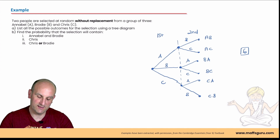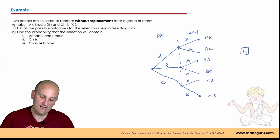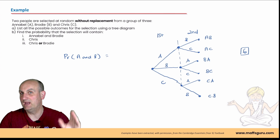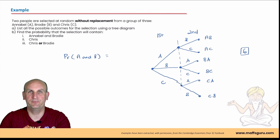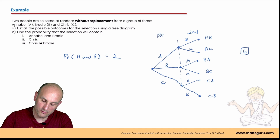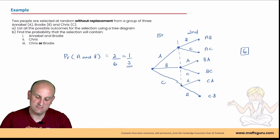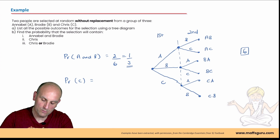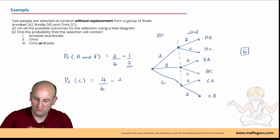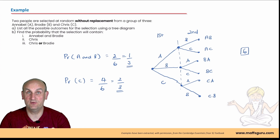Find the probability that the selection will contain Annabelle and Brody. Order isn't specified, so we count A-B and B-A — that's two outcomes out of six, which cancels to one third. Find the probability the selection contains Chris: outcomes with Chris are A-C, B-C, C-A, and C-B — four out of six, which simplifies to two thirds.